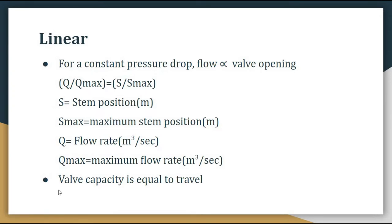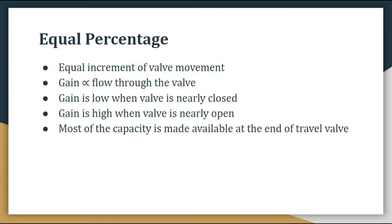In equal percentage characteristic, equal increments of valve movement produce equal percentage changes in flow. The gain will be proportional to the flow through the valve — the more the flow through the valve increases, the more the gain or increment will be. Gain will be low when the valve is nearly closed, and gain will be highest when the valve is nearly open — most of the capacity is made available at the end of the travel. So I hope the three characteristics of a control valve are clear to you.